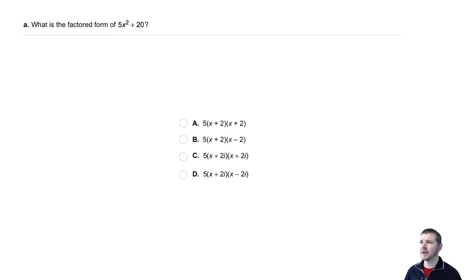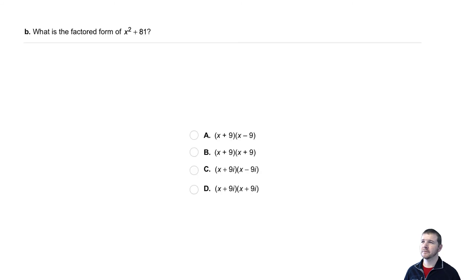Your turn. Part A: What is the factored form of 5x² + 20? Part B: What's the factored form of x² + 81?